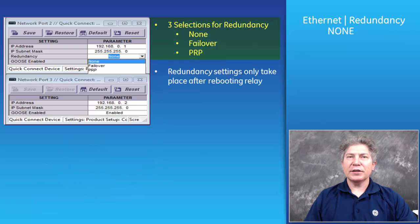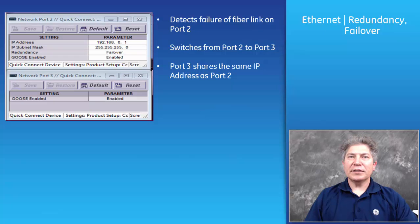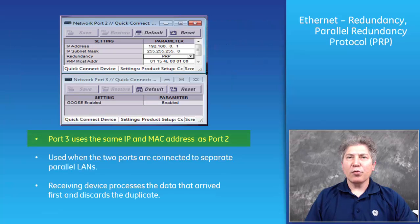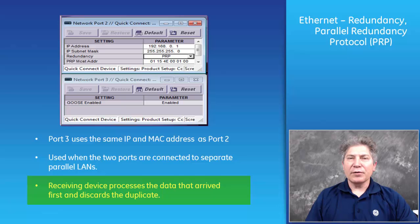In the pull-down menu for port 2 redundancy, the choices are: None, Failover, or PRP. If set to None, ports 2 and 3 operate independently with their own IP address and subnet mask. If set to Failover, port 3 shares the same IP address as port 2, with port 2 active normally; if port 2 has a disruption, port 3 becomes active, and recovers back when port 2 is restored. If set to PRP, ports 2 and 3 share the same IP address, subnet mask, and PRP multicast address, using different LAN paths to reach the server — whichever data arrives first is used and the later one is discarded.